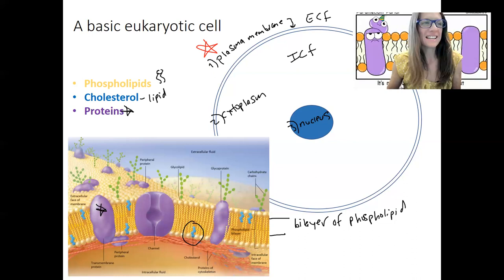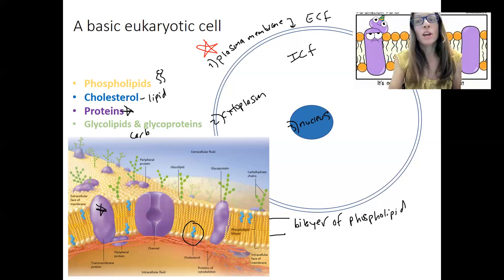Some of them, which you can see, span the entire membrane. There are some that are on the edges as well. These span the whole membrane. There are carbohydrate chains that form a glycocalyx, which is a fuzzy coat — this is essentially the ID tag.